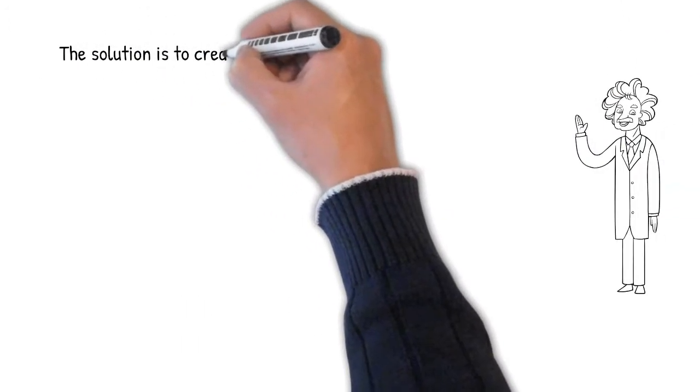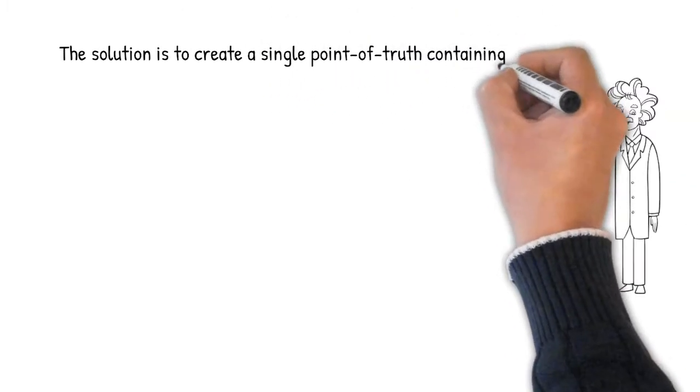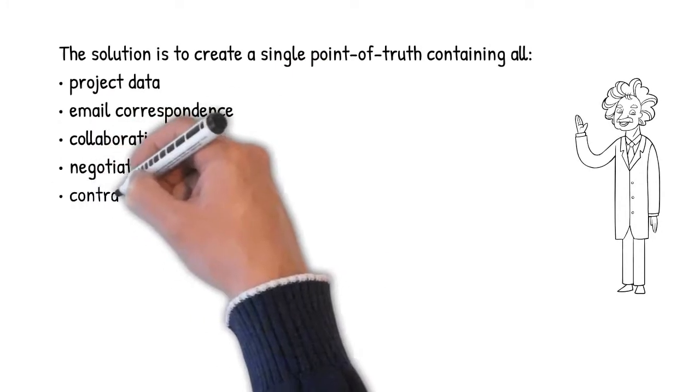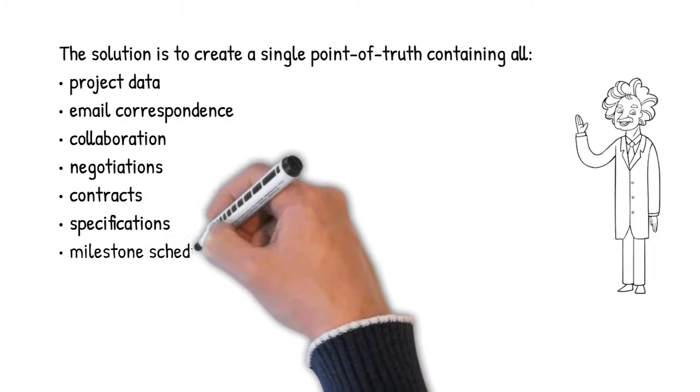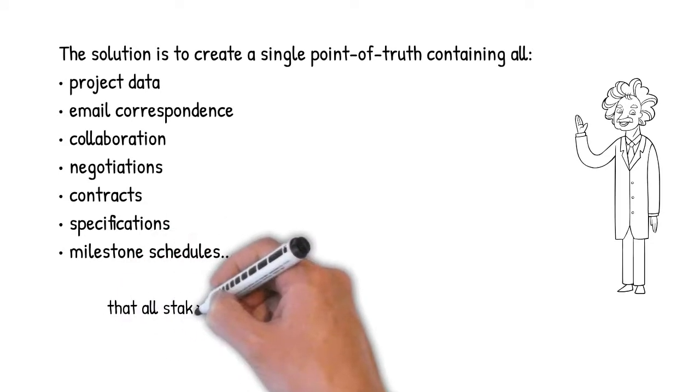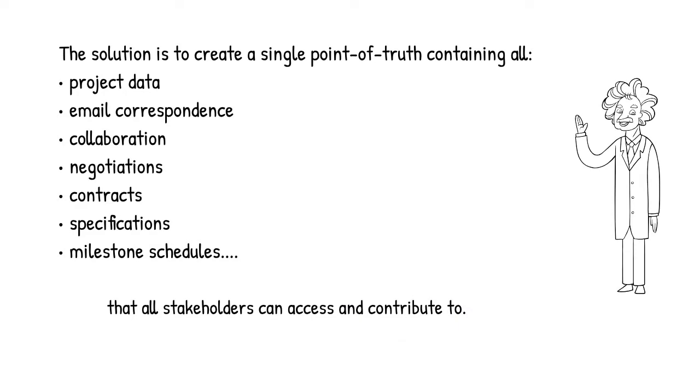The solution is to create a single point of truth containing all project data, email correspondence, collaboration, negotiations, contracts, specifications, milestone schedules, and all other information relating to the project that all stakeholders can access and contribute to.